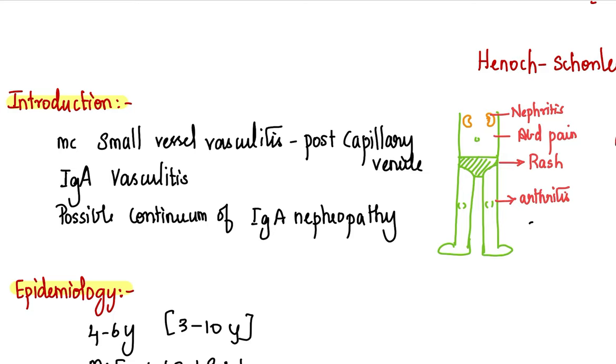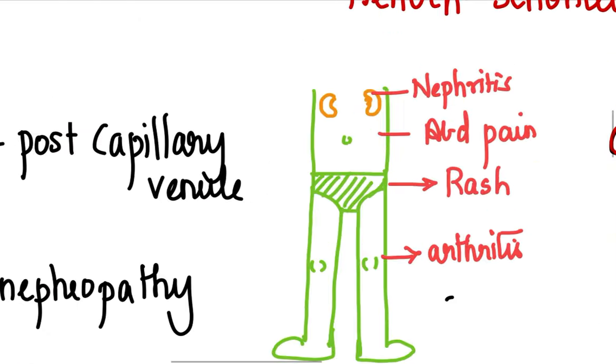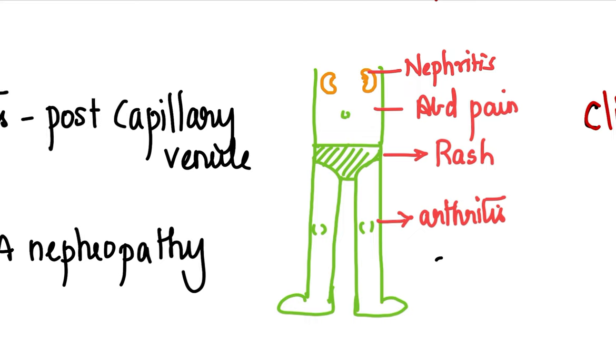In fact, this is considered in continuum with IgA nephropathy. Before we go into epidemiology, the classic tetrad of Henoch-Schonlein purpura is as follows: it is nephritis, abdominal pain, rash, and arthritis. I will describe each and every one of them in just a moment.